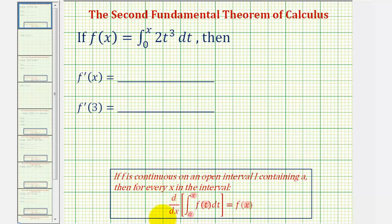The reason this can be helpful is, even if we're not able to evaluate this integral, we can still find this derivative using this theorem. So in our example, we'll first apply this theorem, and then because we can find this integral, we'll actually find the integral and then find the derivative to verify the results.